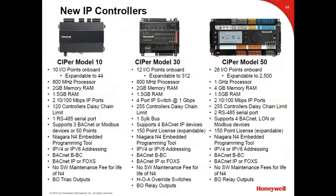Controller comparison: the Cyper 10 and Cyper 30 have an 800 MHz processor and 2 GB RAM, while the Cyper 50 has a 1 GHz processor and 4 GB RAM — same as a JACE. The Cyper 50 is effectively a JACE; the Cyper 10 and 30 are small JACEs. The Cyper 30 includes a Silk bus, so you can use Silk sensors on it — not available on the 10 or 50. The Cyper 30 is expandable up to 312 points with up to 15 IO modules. Importantly, there is no software maintenance fee for the life of Niagara 4 for these controllers — different from a JACE.